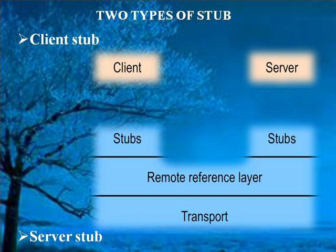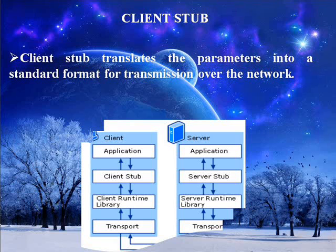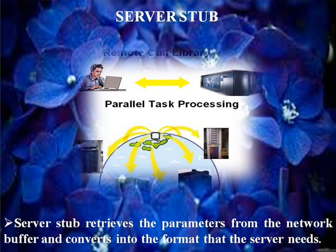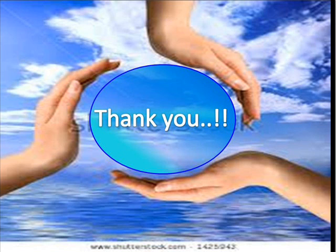There are two types of steps: Client step and Server step. The client step translates the parameters into a standard format for transmission over the network. The server step retrieves the parameters from the network buffer and converts them into a format that the server needs.